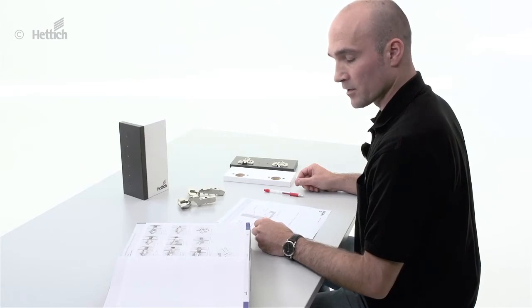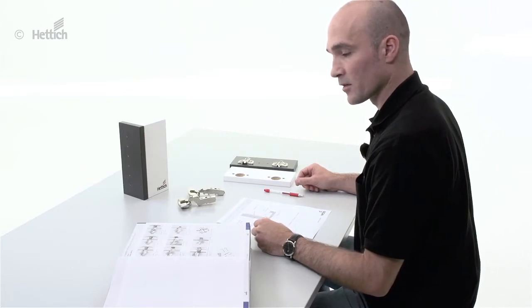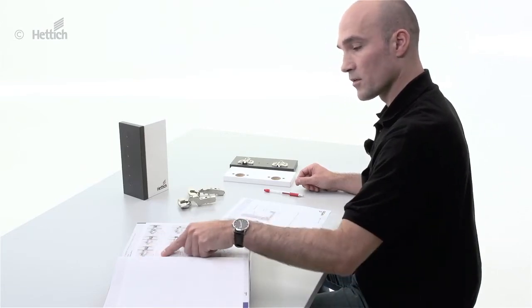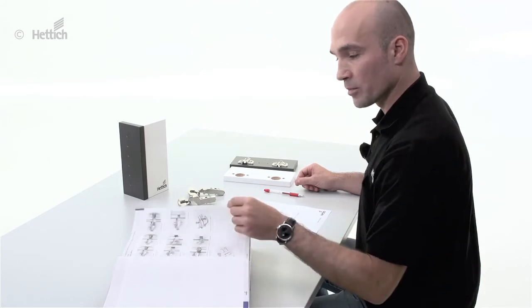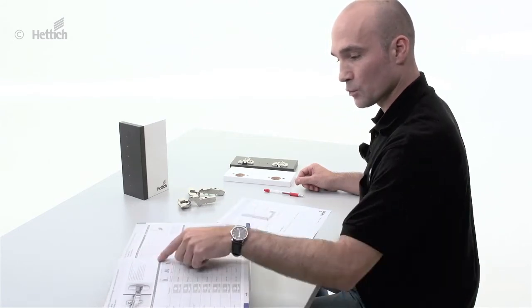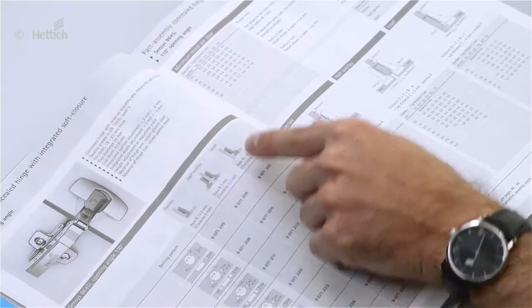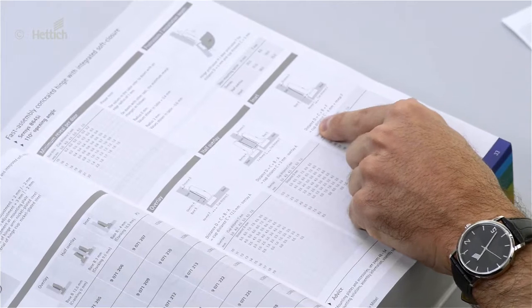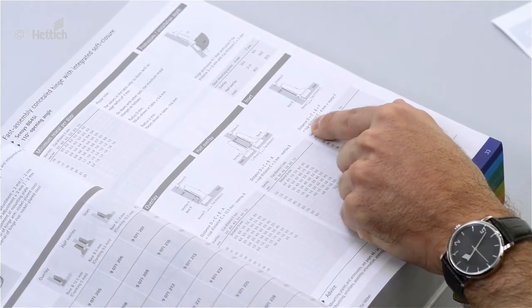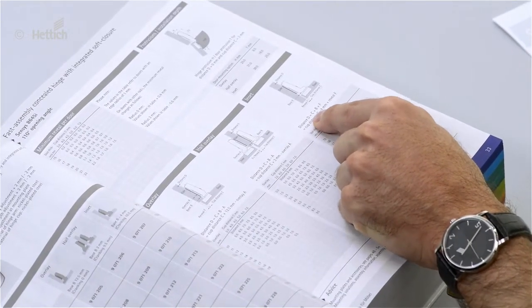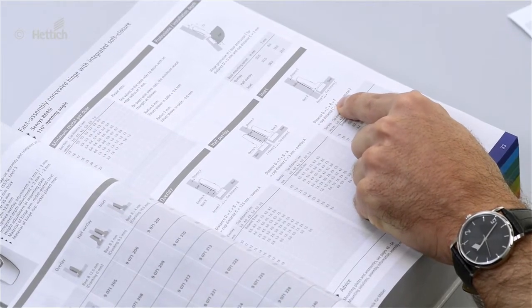In this step we want to demonstrate how to calculate a standard inset application. Therefore we go to the catalog page and we see here the inset application and on the opposite side the formula to calculate the mounting plate distance D which is C plus B plus F.